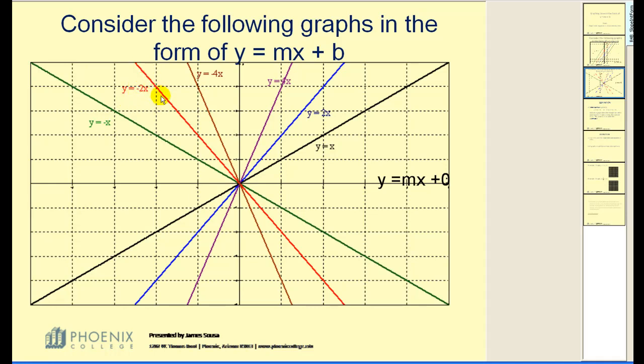Again, it is steeper, but now it's going downhill from left to right. And y equals negative 4x. It's going downhill because it's a negative slope, but it's very steep because of the 4.